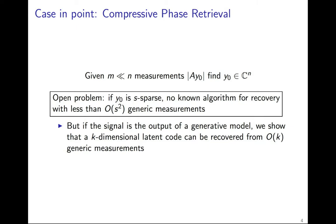If y0 is s-sparse, there is no known algorithm to recover y0 from less than order s-squared generic measurements. This order s-squared computational bottleneck is in stark contrast to the fundamental order s-recovery result in the linear compressed sensing case.